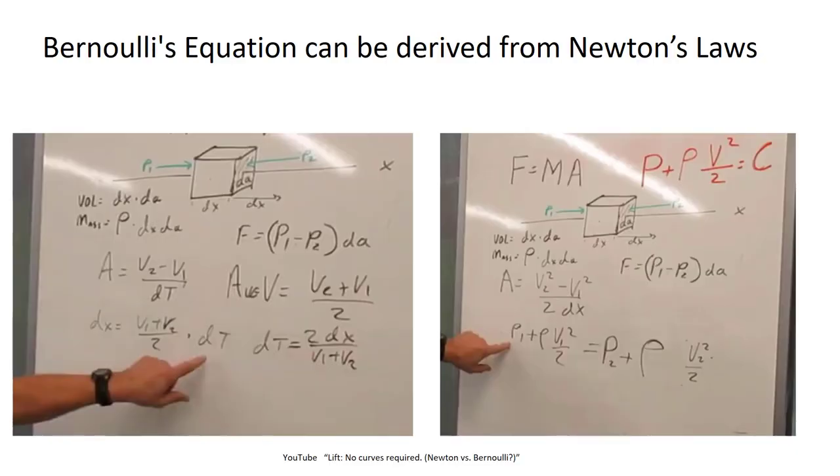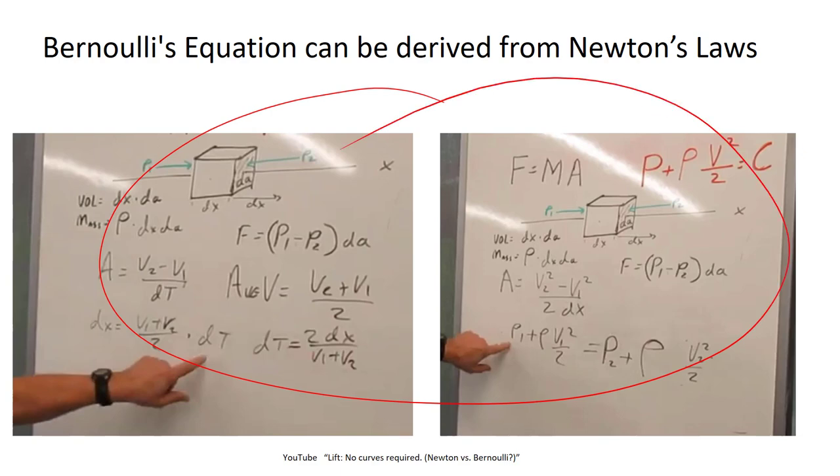Now, if you want to understand the relationship between Bernoulli's equation and Newton's laws, you can derive Bernoulli's equation directly from Newton's laws, particularly the second law, using either calculus or in the case of the example shown here, I did it with algebra. There will be a link in the description to this video if you want to see that derivation. It takes a few minutes and a couple screens of algebra, but there's really no magic here. There's nothing magic about Bernoulli that differentiates it from Newton's laws because you can just go back and forth with a bit of math.